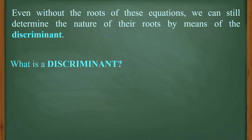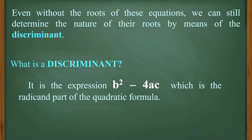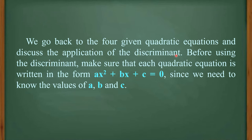This is where the discriminant comes in. The discriminant is the expression b squared minus 4ac, which is the radicand part of the quadratic formula — the expression inside the radical symbol. Before using the discriminant, make sure that each quadratic equation is written in the standard form ax squared plus bx plus c equals 0, since we need to know the values of a, b, and c.